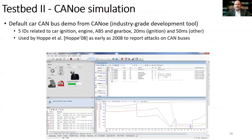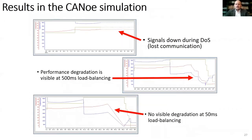Our second testbed takes advantage of an existing simulation from the CANOE tool, which is an industry standard tool. Notably, this simulation environment was previously used more than a decade ago to perform some of the first reported attacks on the CAN bus. In the simulation, we have five CAN IDs responsible for various engine, gearbox, and ABS functions. When a DoS takes place, communication is completely lost. With 500-millisecond load balancing, the signals recover, and although there are visible distortions, the car remains functional in our simulation. At 50-millisecond load balancing, there is no visible distortion of the signals.